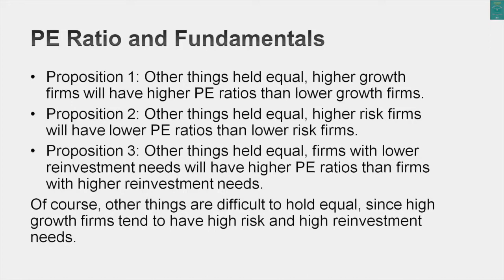You might think most high-risk companies you know have high P/E ratios — well, most of them also have higher growth. But if you hold everything else constant, higher risk should translate into lower P/E. And other things remaining equal, the higher the payout ratio, the higher the P/E ratio. But if you hold growth constant and pay a much higher percentage of earnings as dividends, you're generating a higher return on equity. So I'd restate proposition three: the higher the return on equity, the more efficiently a company delivers growth, and the higher the P/E ratio should be.